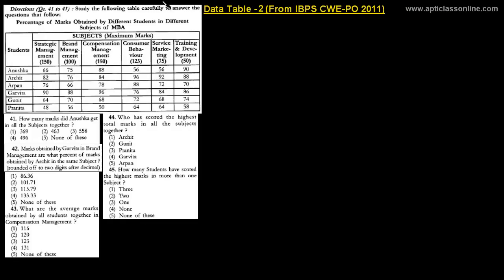Welcome to the class. In this class we will extend our discussion of Data Table 2, which is a topic of data interpretation. With the help of this example we have solved question numbers 41 and 42 in the previous class. Before starting with question number 43, let's remind you that in this data the percentage of marks obtained by different students are given, so these figures indicate the percentage of marks — we have to keep that in mind.